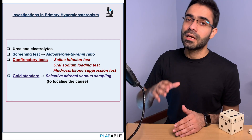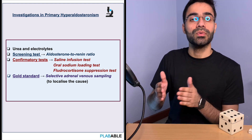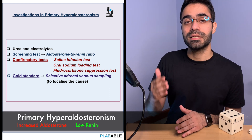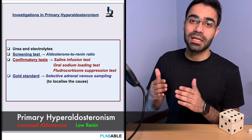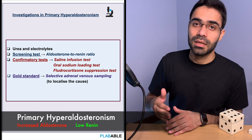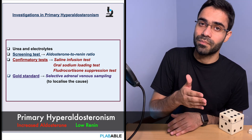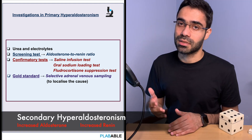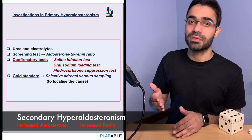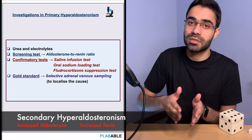In our patient with treatment-resistant hypertension, the most likely diagnosis is hyperaldosteronism or Conn's syndrome. The screening test of choice is the aldosterone-to-renin ratio. In primary hyperaldosteronism, excessive aldosterone provides negative feedback, suppressing renin, so aldosterone is raised and renin is decreased. In secondary hyperaldosteronism, both renin and aldosterone are elevated, since it is the increased renin that is driving aldosterone production.